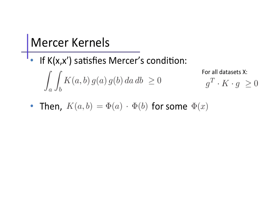As a side note, Mercer's condition is effectively asserting that the Gram matrix k has a positive semi-definite structure for any possible data sets.